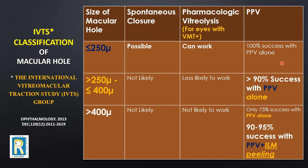For small holes, just removing the vitreous — that is, doing vitrectomy — achieves closure. If a hole is more than 250 microns but less than or equal to 400 microns, it is a medium-sized hole. These holes are unlikely to close on their own, and injecting special chemicals alone is very unlikely to work. These holes close in more than 90 percent of cases with vitrectomy alone. If the hole is more than 400 microns, it is a large hole — only surgery works, and vitrectomy alone is not so successful, with one quarter of cases not closing.